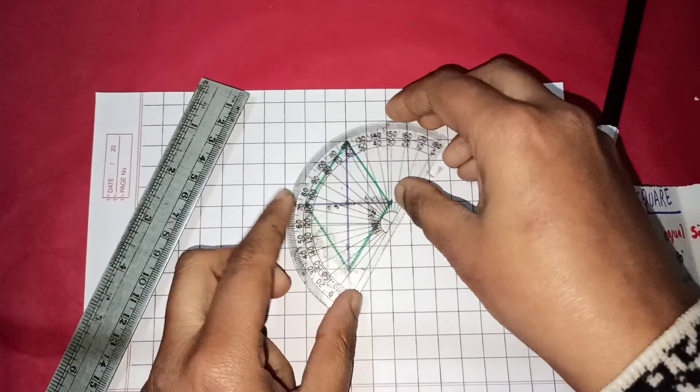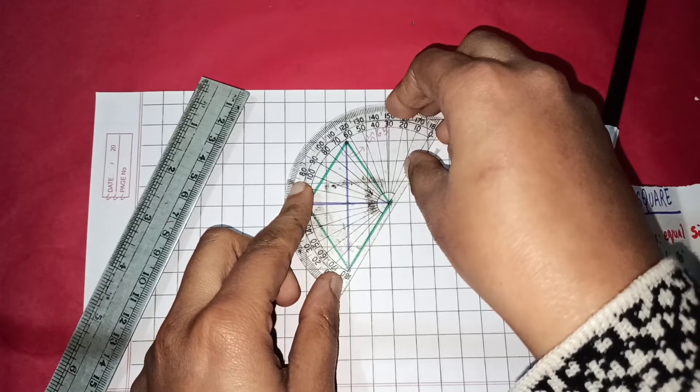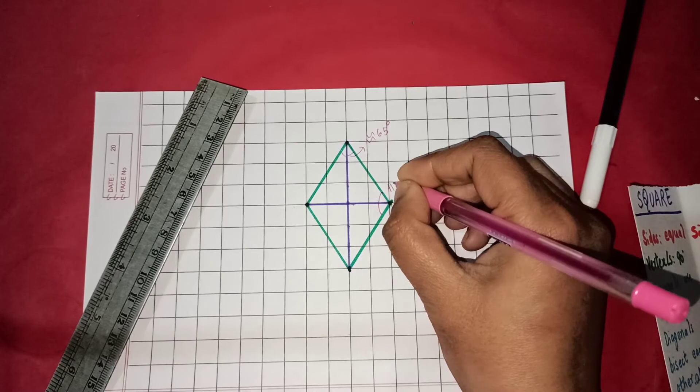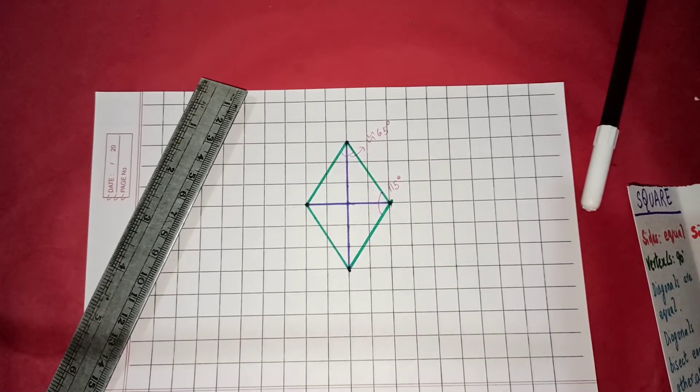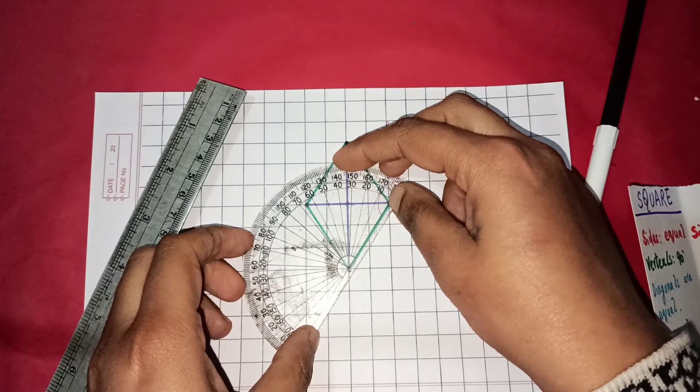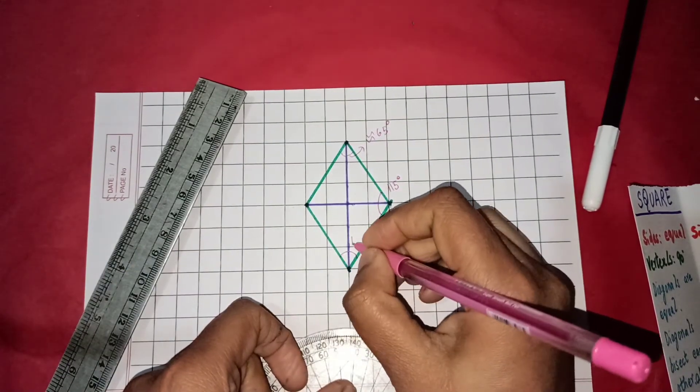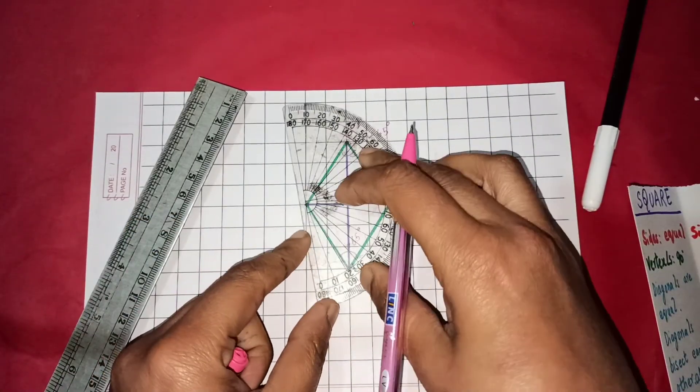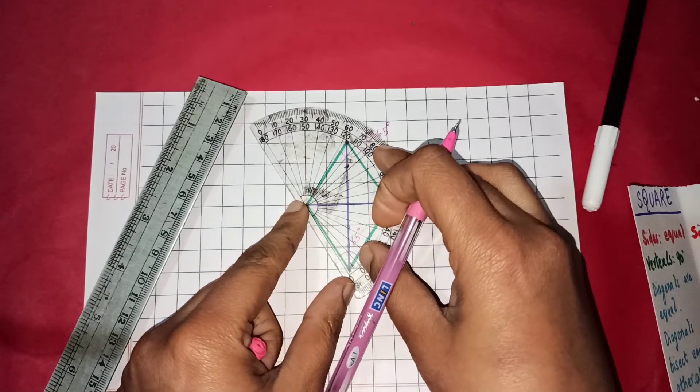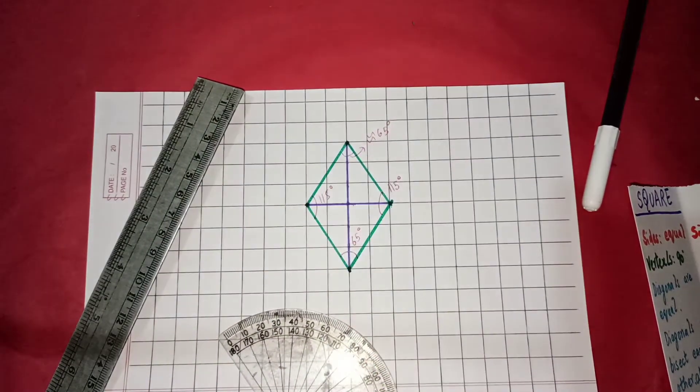Let us measure this angle. It is approximately 115 degrees. Let us measure the third angle. It is around 65 degrees. So we can see something now. Let us measure the fourth angle. It is around 115 degrees.